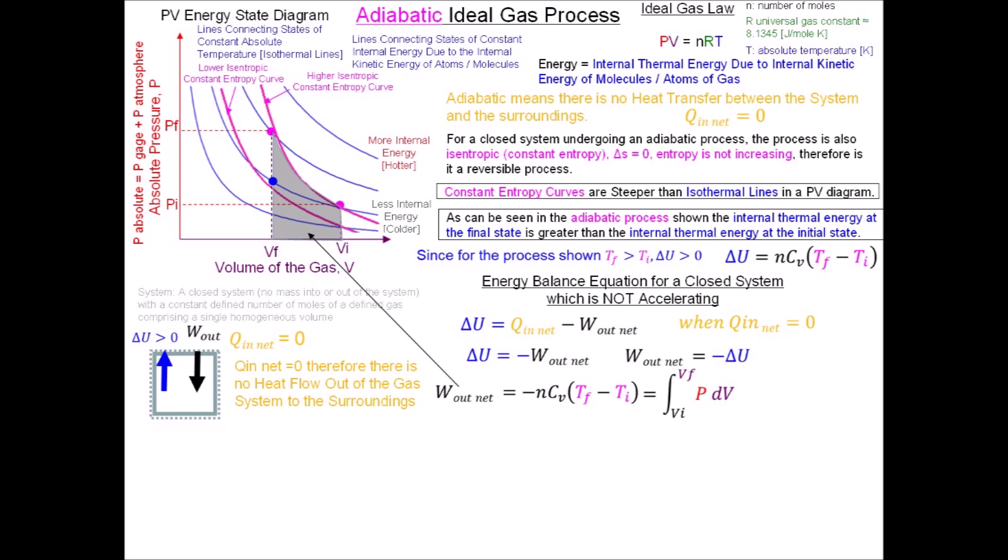The variable P during this process is truly variable, changing at each instant as the process follows the magenta curve. Using the ideal gas law, we can represent P at each state as a function of nRT and V. We recognize that at all intermediate states of this adiabatic process following the magenta curve, both the temperature and volume are changing and are not constants.